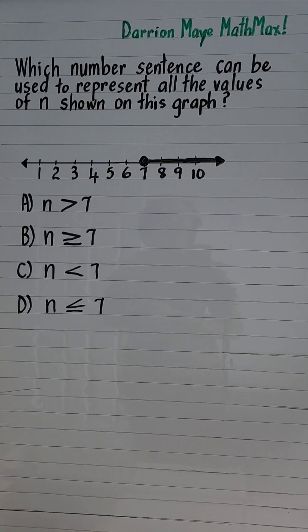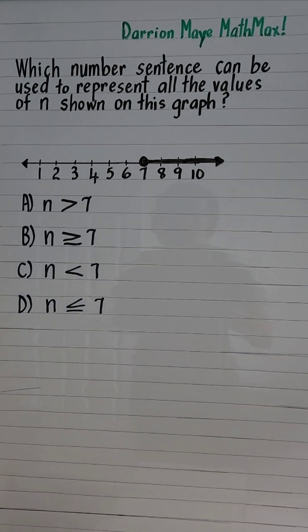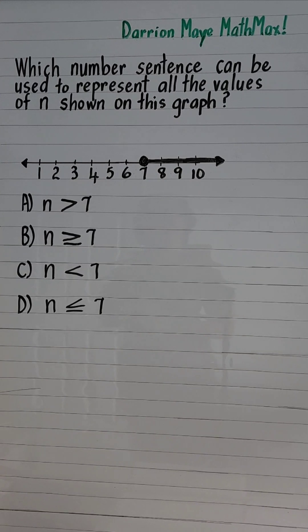Which number sentence can be used to represent all the values of n shown on this graph? A closed circle means that number is included in the values.